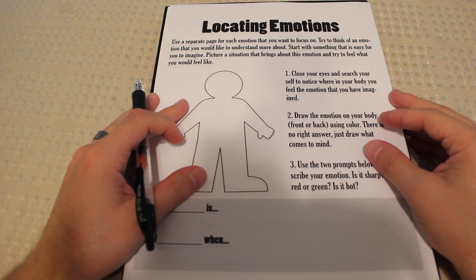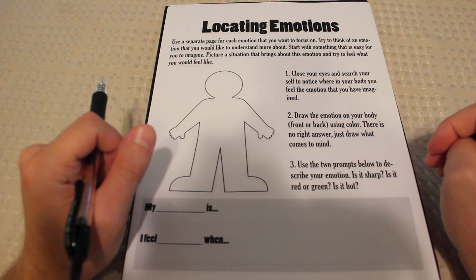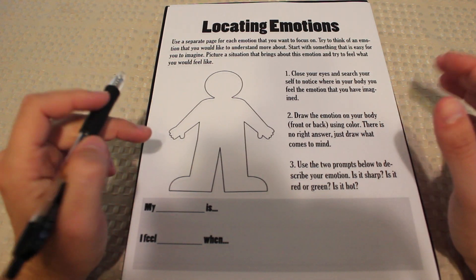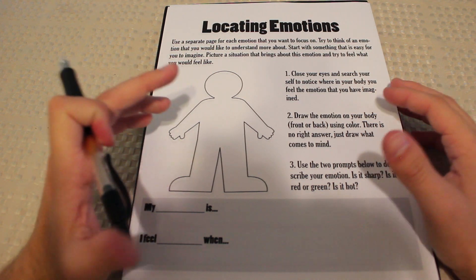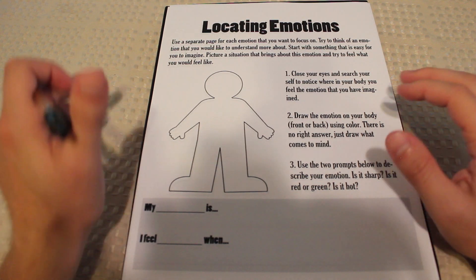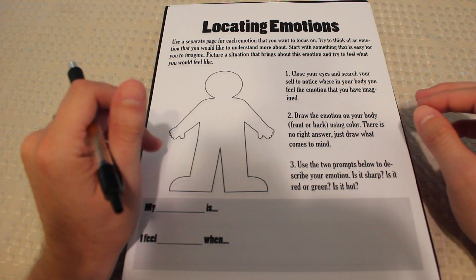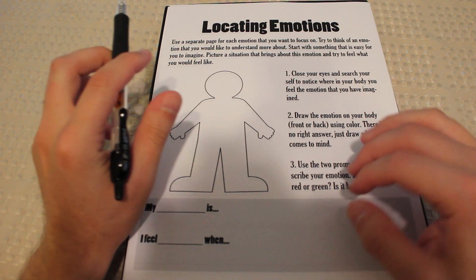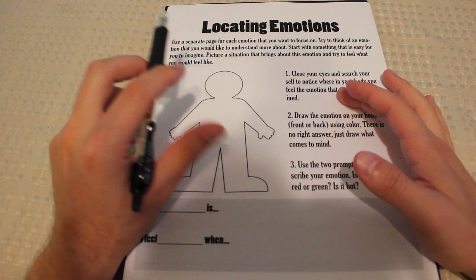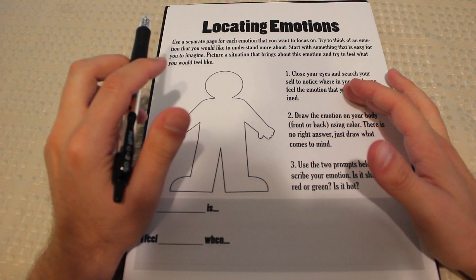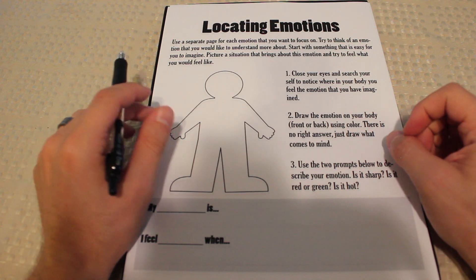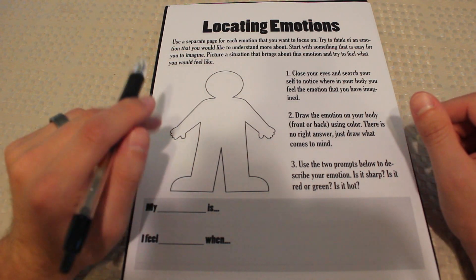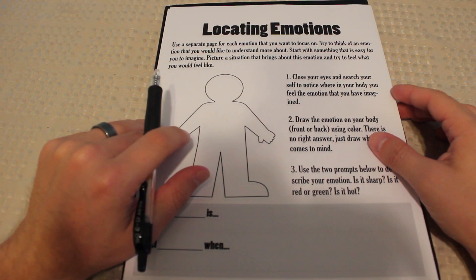So the first step is to close your eyes and search yourself to notice where in your body you feel this emotion that you've imagined. So I'm going to draw on something that's not a serious issue at the moment, but it is something that comes to mind very easily. And funny enough, that is anger. So I'm going to close my eyes right now just like I say in this first step. So I'm going to close my eyes and I'm actually going to imagine a situation that's anger-provoking for me. So what I'm imagining is my downstairs neighbors, because I really dislike them, and they're very inconsiderate with noise, anything really. Noise, their dog crapping all over the yard and them not picking it up, noise, them saying rude things to people as they walk by, all of that.